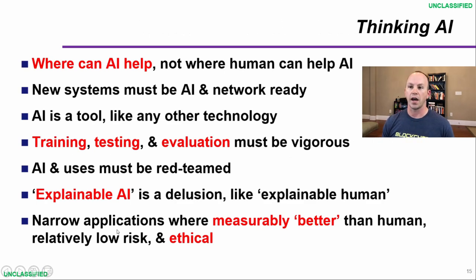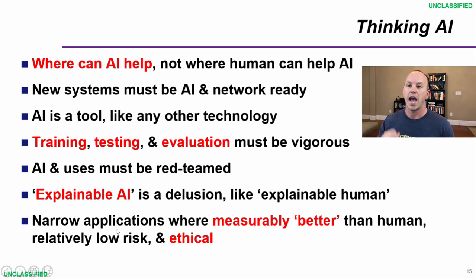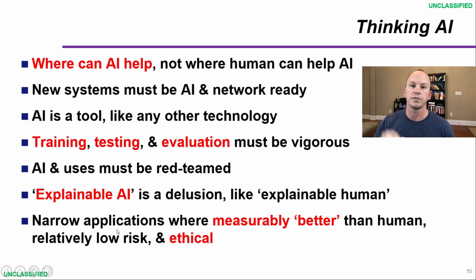Thinking about AI, we need to think about where AI can help humans make better decisions and actions, not where humans get put in the AI decision chain — that's the wrong way to think about it. New systems we're inventing today must be AI-ready from the start, not bolt it on afterwards — that's a recipe for failure. AI is a tool, it's a technology, it is not a solution. The moment you start chasing AI just to chase AI, you will not achieve effects. Training, testing, and evaluations are extremely important — they must be vigorous and red-teamed before the adversary is able to do that.